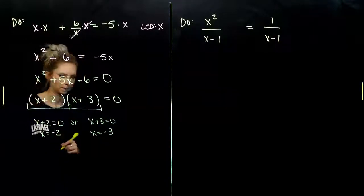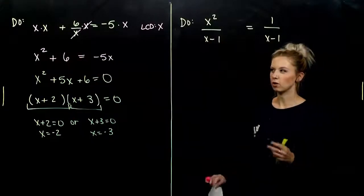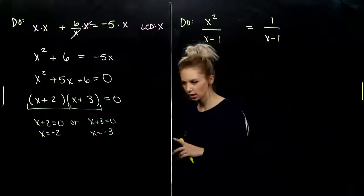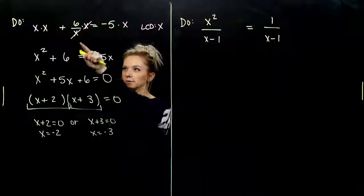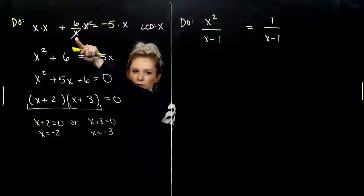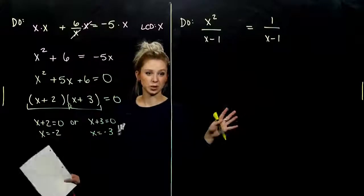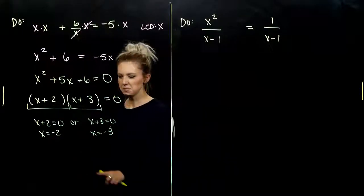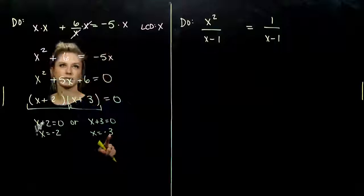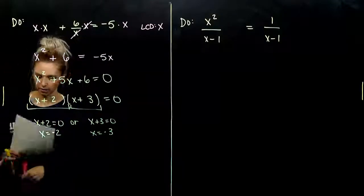Okay. And whenever we're dealing with quadratics, we want to check all of our answers to make sure it doesn't cause any problems down in that denominator. Because if I plug in zero for x, what happens in this case? That term is undefined, and we cause problems. So, when we plug in negative two or negative three, does it hold true? Let's check real quick.